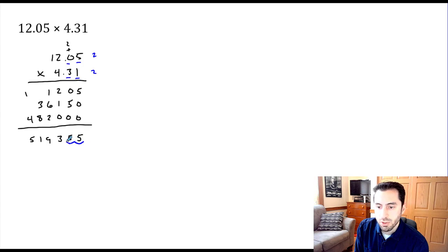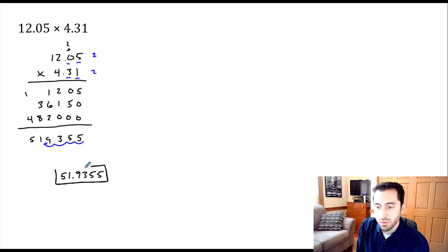So 1, 2, 3, and 4. So in between the 1 and the 9 is where we need to put our decimal for our final answer. So we end up with 51.9355 as the product of those two decimals.